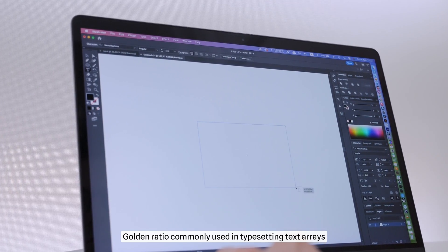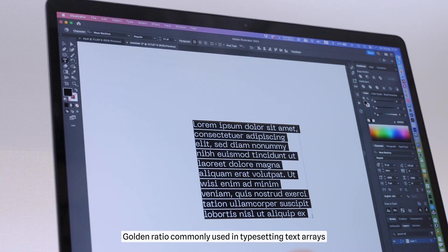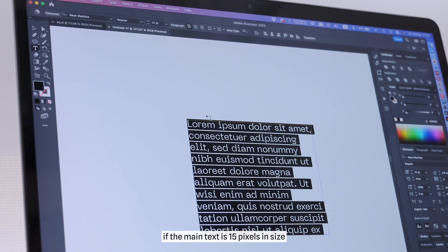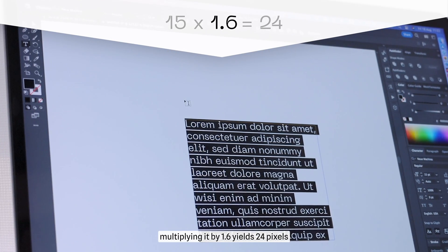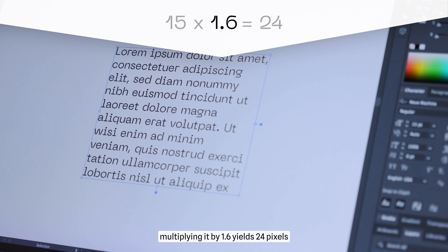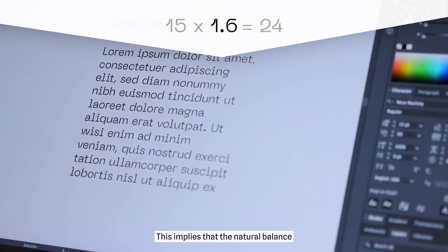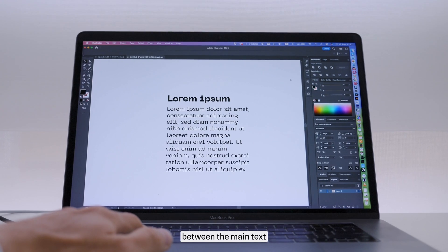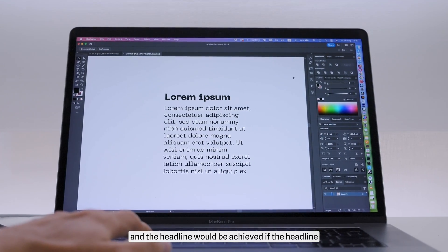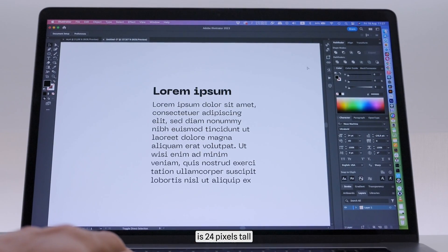Golden ratio is commonly used in typesetting text arrays. For example, if the main text is 15 pixels in size, multiplying it by 1.6 yields 24 pixels. This implies that the natural balance between the main text and the headline would be achieved if the headline is a 24-pixel size.